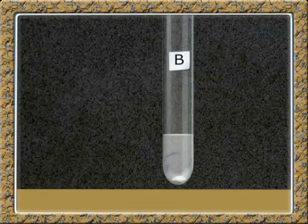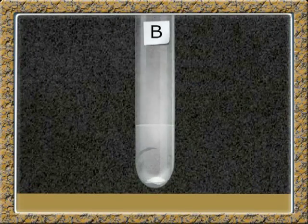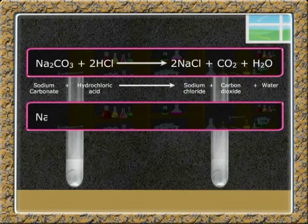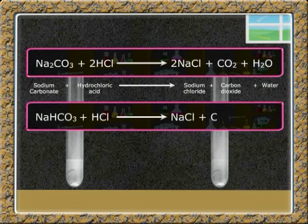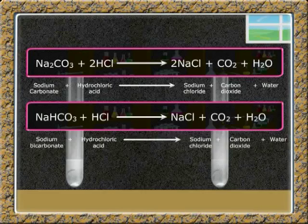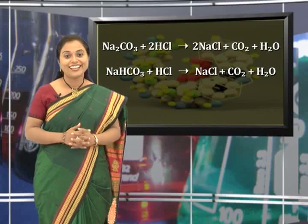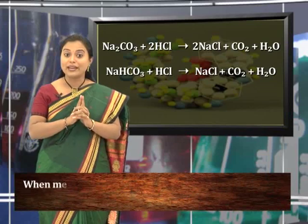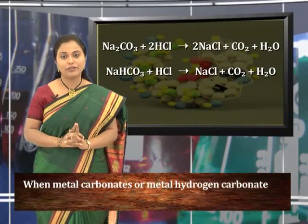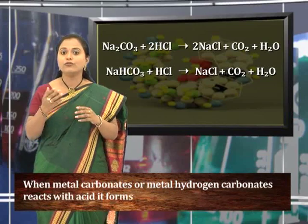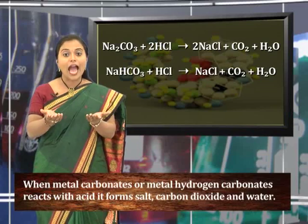In test tube B, sodium bicarbonate reacts with hydrochloric acid to form sodium chloride, carbon dioxide, and water. The chemical equation is: NaHCO₃ + HCl → NaCl + CO₂ + H₂O. So when a metal carbonate or metal hydrogen carbonate reacts with acid, it forms salt, carbon dioxide, and water.